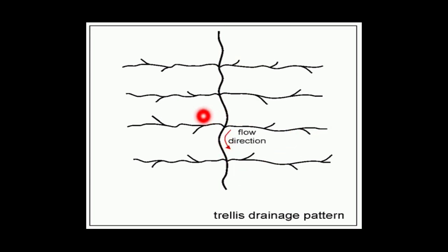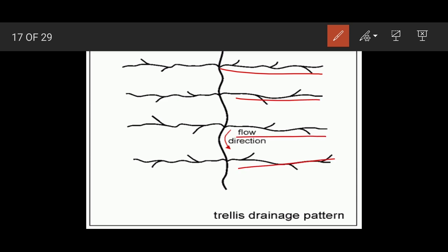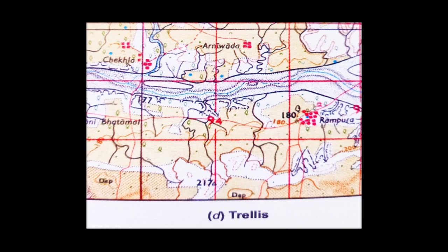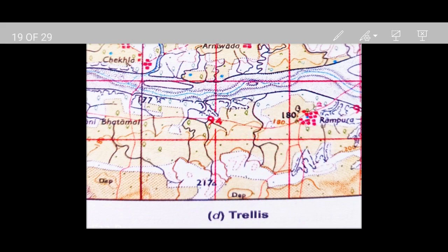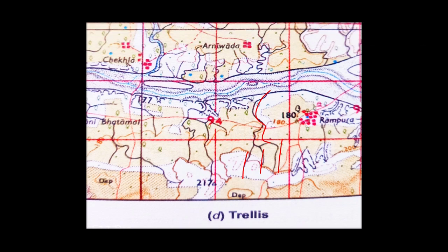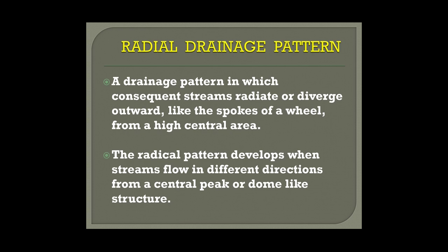You can see the main river with tributaries joining it and flowing parallel to each other. In the topographical map, the main river is visible with tributaries joining at approximately 90 degrees — this is the trellis drainage pattern.